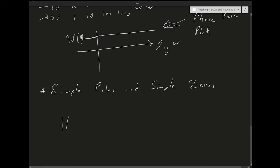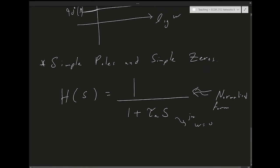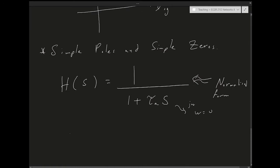Let's write down a simple pole in normalized form: 1 over (1 + τ_A·s). This is the normalized form of a pole because at omega equals 0, s = jω becomes zero, and the whole thing becomes unity — that's why we call it normalized. To plot this, we plug in jω and take the 20 log of the magnitude.